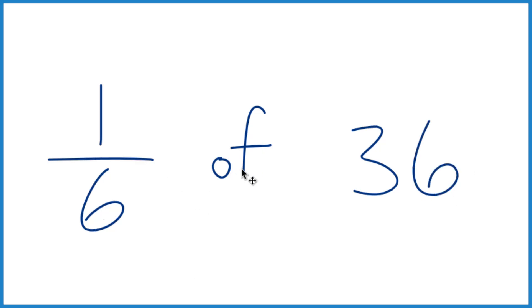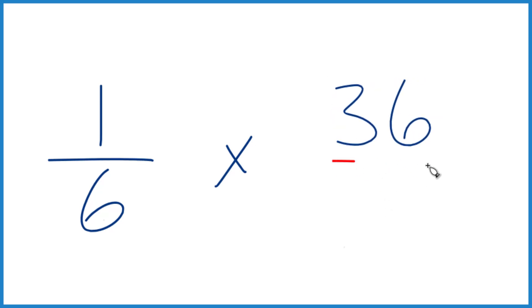So the first thing you do is instead of 'of', we're going to call this multiplication, it's the same thing. And then we're going to take the 36 and we're going to get a little bit smaller, move it up here. And we're going to call that 36 over 1.